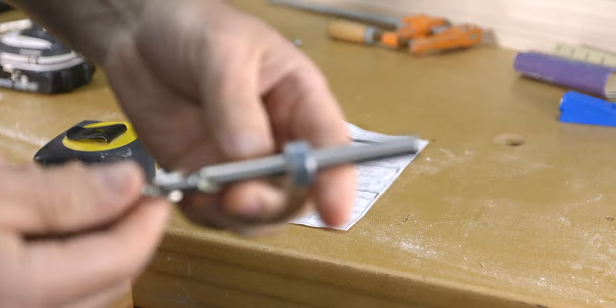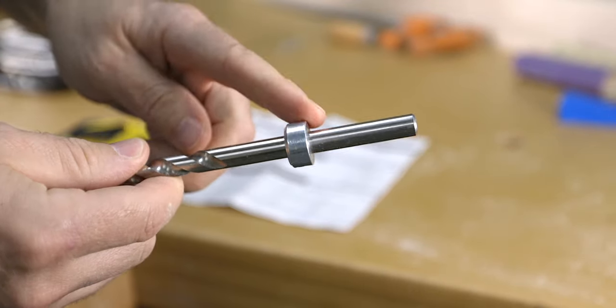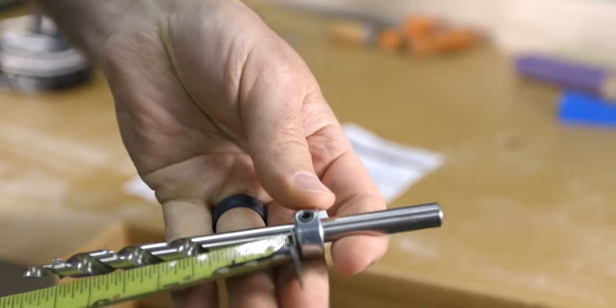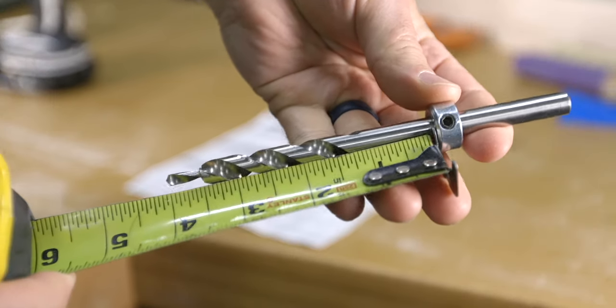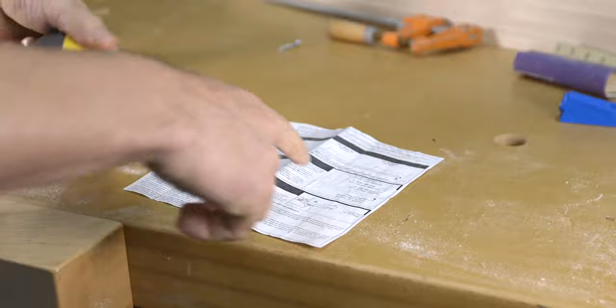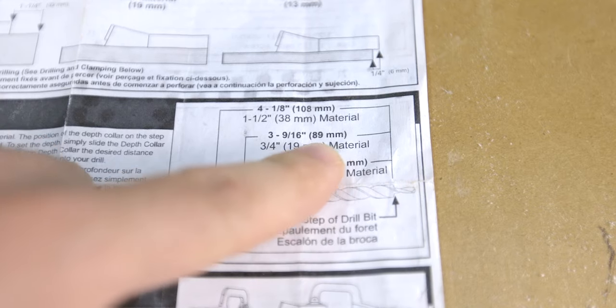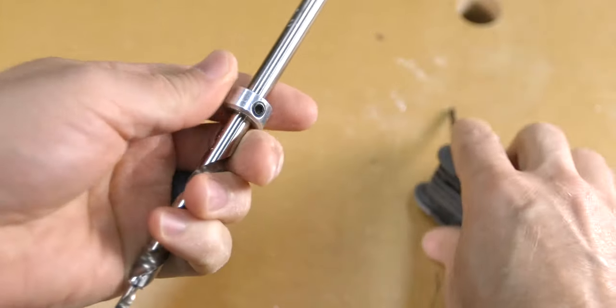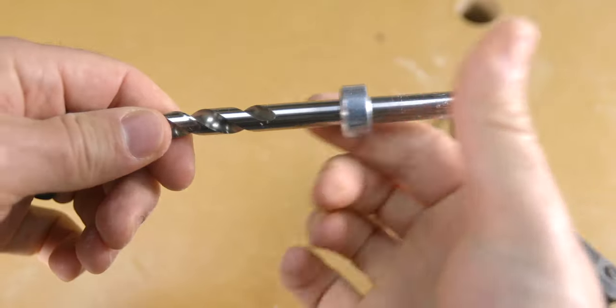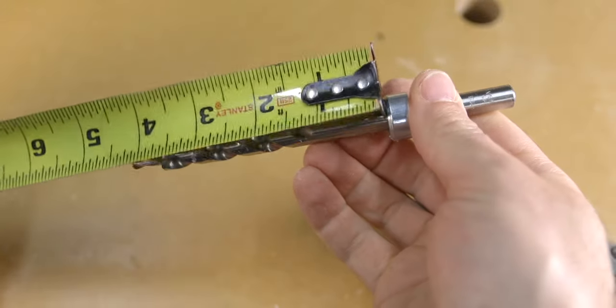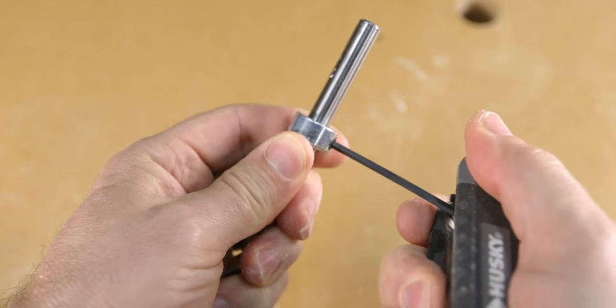There are two important things to set up before drilling begins. First you need to set the depth collar to the proper position on the bit. Craig recommends setting the collar at three and nine sixteenths for three quarter inch material, and that's what we're using today. To set the collar position, loosen the allen screw and adjust the collar either up or down until you've reached your three and nine sixteenths, and then tighten everything back up.